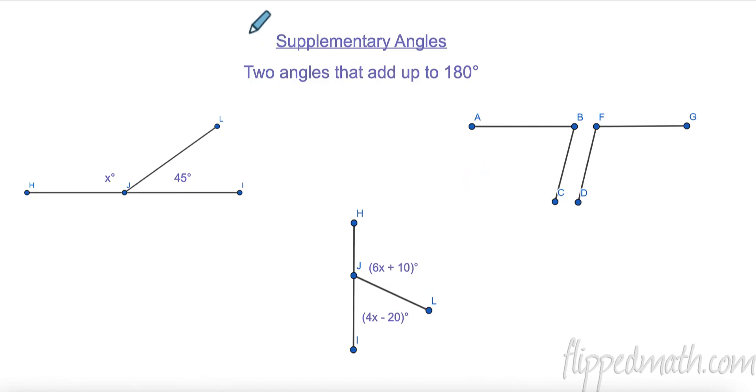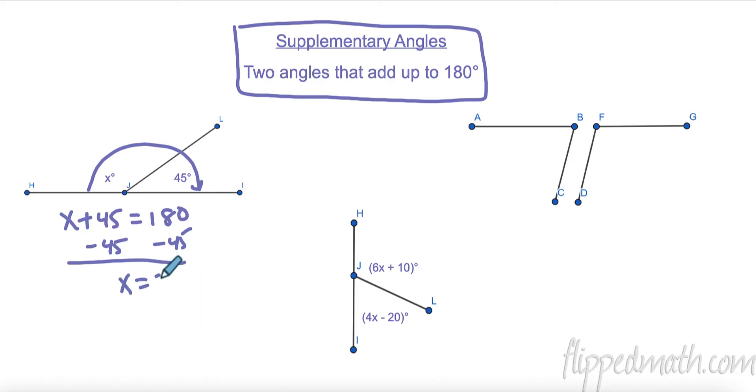Now supplementary, these are two angles that add up to 180 degrees. They would form a straight line if they were together. So this angle here, this is a straight angle. H, J, I is a straight angle. This whole thing right here is a straight angle. That adds up to 180. So X plus 45 equals 180. Subtract 45 from both sides. And we get X is 135 degrees. Nice.